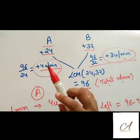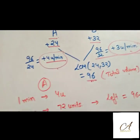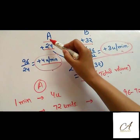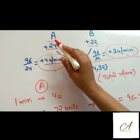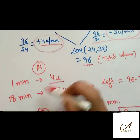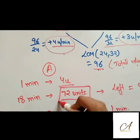Now it is given that in 18 minutes total reservoir has been filled. Let's see in 18 minutes how much A alone fills. In 1 minute A is filling 4 units. So in 18 minutes A is filling 72 units.